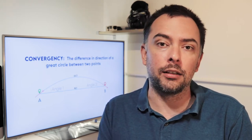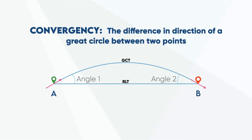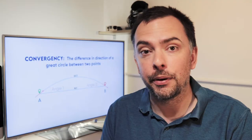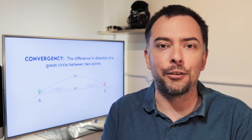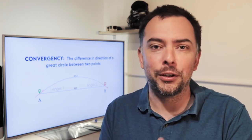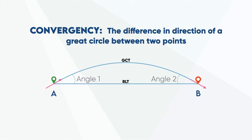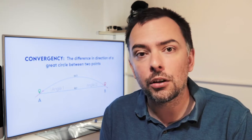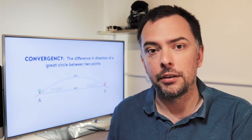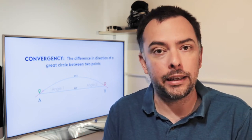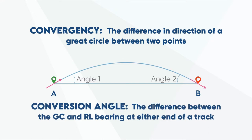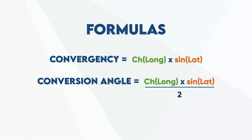Now it begins to feel like we're getting onto something that is directly relevant to pilots. Sometimes you want to know what the angular difference is between the easily plottable rhumb line track and a more efficient, cheaper, shorter great circle route — although if you're flying around in a single-engine piston, this probably isn't going to be too helpful for you when you're planning your next cross-country. And this is where the concept of conversion angle comes in. Think of conversion angle literally as the angle required to convert your rhumb line track to a great circle track at either end of the route. Since we know that both angle one and angle two on this diagram are the same value, and that added together they equate to the total convergency between the two points, we can say that conversion angle is equal to half the total convergency.